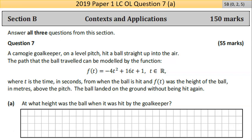It's the first question in section B, and a lot of the parts follow on from one another, so they can ask much bigger things. A camogie goalkeeper on a level pitch hit a ball straight up into the air. The path that the ball travels can be modelled by the function f(t) = -4t² + 16t + 1, where t can be any number.